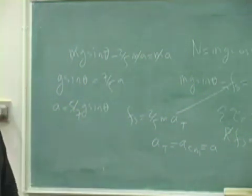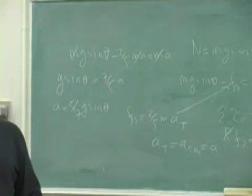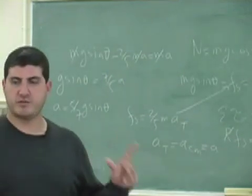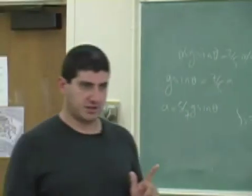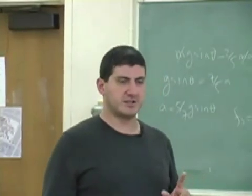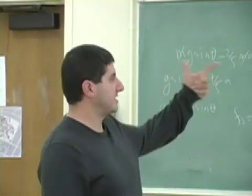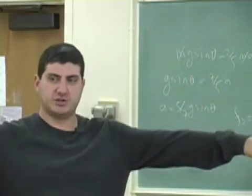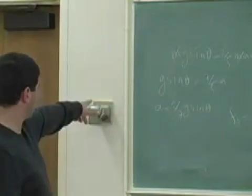And then A is going to equal 5 sevenths G sine theta, which is less than the acceleration of a block if there was no friction. Acceleration of a block without friction is G sine theta. Remember how we mentioned that the other day? Because this is a rolling object, its potential energy is going into two kinds of kinetic energies. So it's slower.